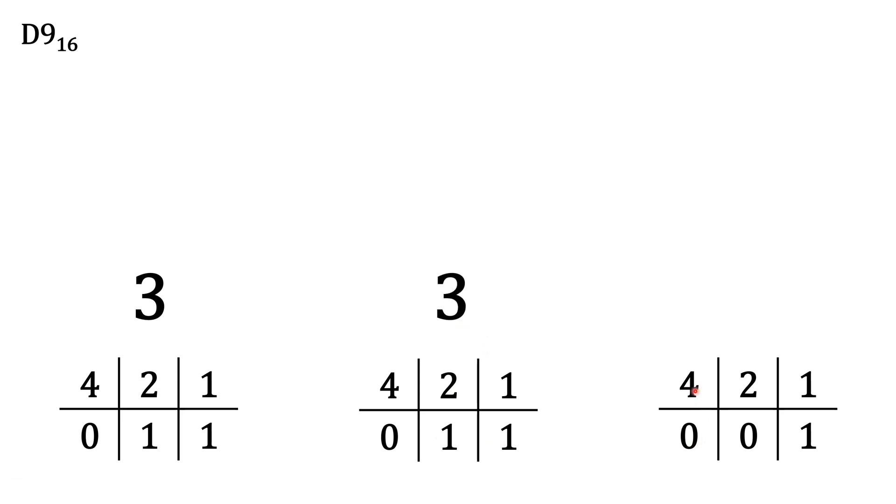And finally here we have zero fours, zero twos, and one one which gives us one. We'll combine these three octal digits into one number. So now we have the octal number 331.